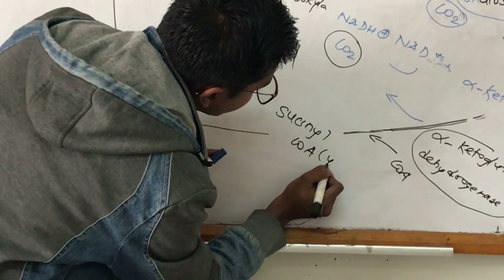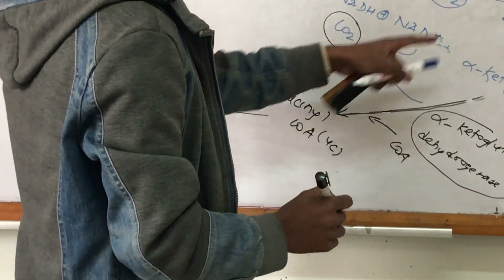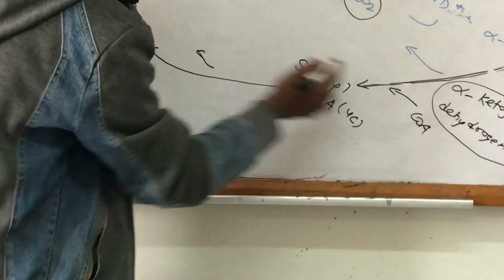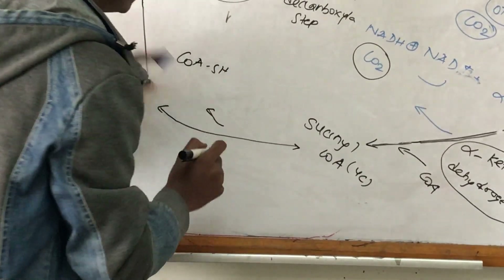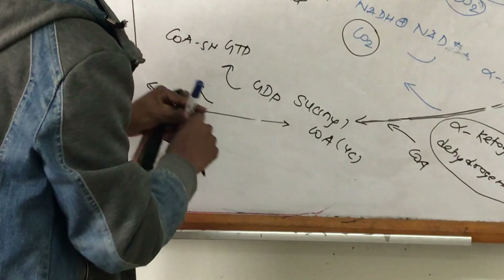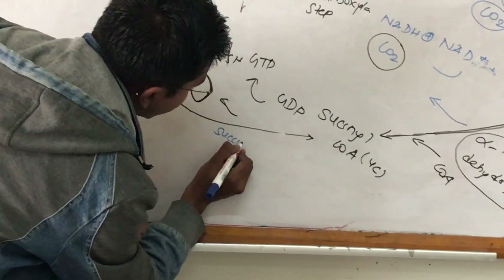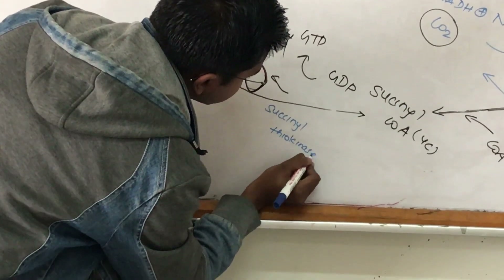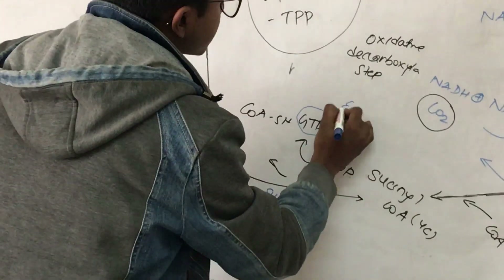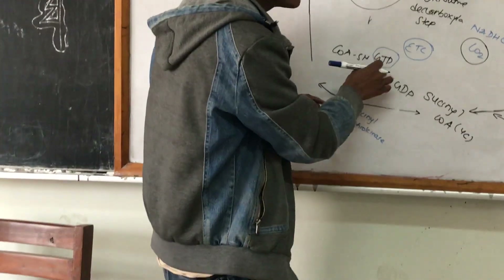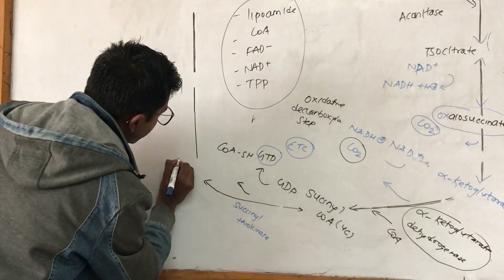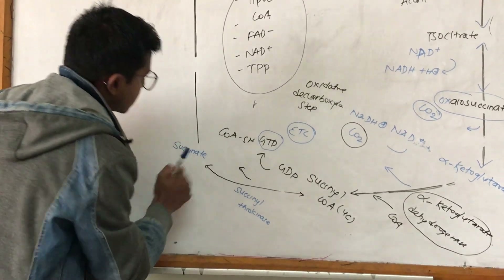Succinyl Coenzyme A releases coenzyme A in an exothermic reaction. From GDP, GTP is formed in the presence of the enzyme succinyl thiokinase. Since GTP is generated without going through the electron transport chain, this is substrate level phosphorylation. The compound formed is succinate.